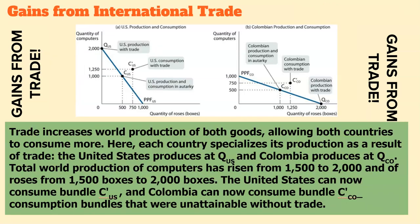There are clearly gains from trade between these two countries. The beauty of international trade and these gains from trade — by looking at lower opportunity cost — is that countries can now consume beyond their production possibilities. Notice: they can't produce beyond the production possibilities frontier, but they can consume beyond it. What we see at CUS and CCO is essentially consuming beyond their production possibilities. In autarky they could only consume along the curve, but because there are gains from trade with Colombia, they're able to consume beyond their PPF.